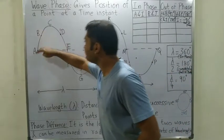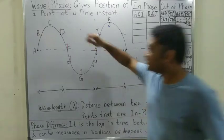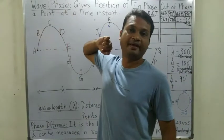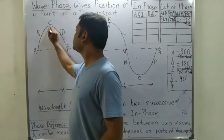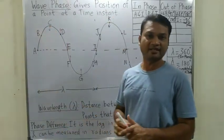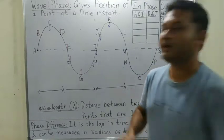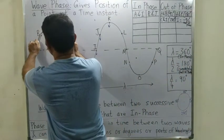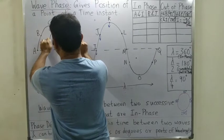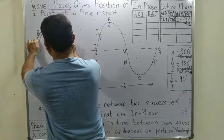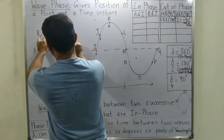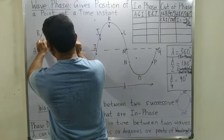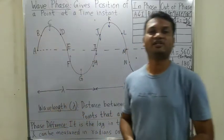What can you say about points A, B, and C? C point is already at the crest — it cannot go further up, so C point will go down. When the wave moves forward, D will become the new crest. But C, B, and A are all heading in the downward direction.